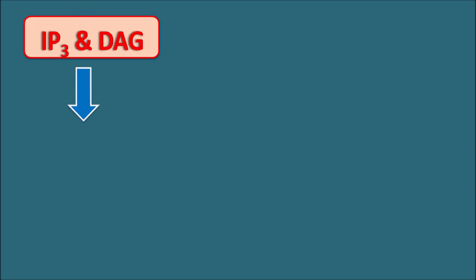We have seen the different types of secondary messengers: IP3 and diacylglycerol, and the second type is cyclic AMP. IP3 and diacylglycerol always increase intracellular calcium levels, producing excitation of the postsynaptic membrane. If it is a muscle, they produce contraction. If it is a neuron, they produce excitation. If it is a gland, they produce secretion.